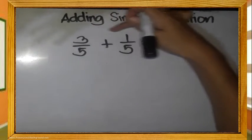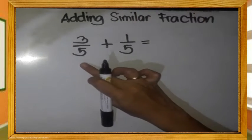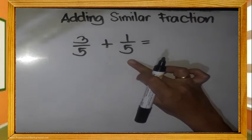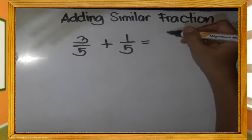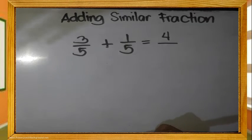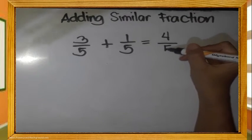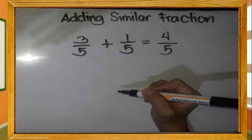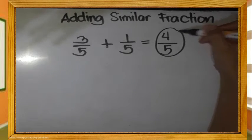we just add the numerators and copy the denominator. So, 3 plus 1 equals 4. What is our denominator again? 5. Just copy it. So, 3 fifths plus 1 fifth is 4 fifths.